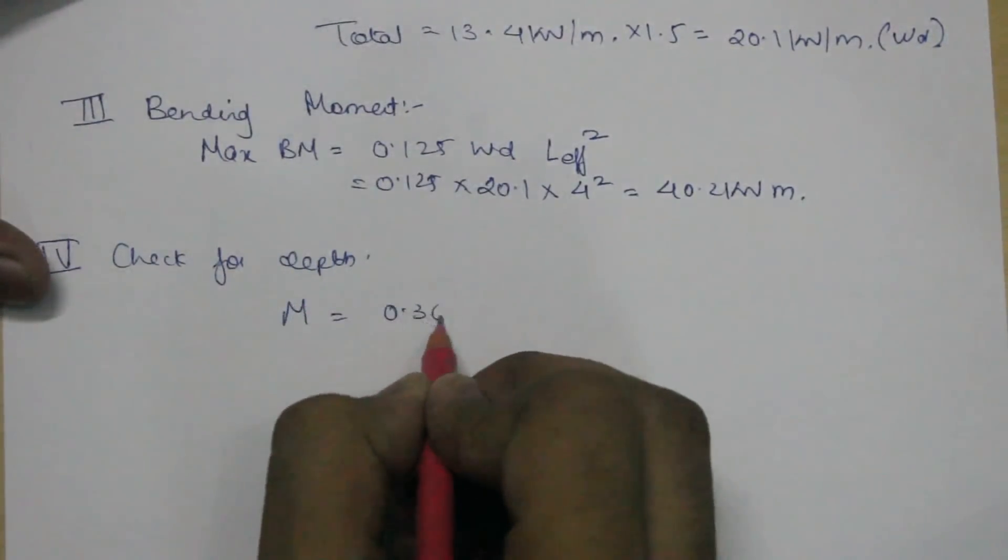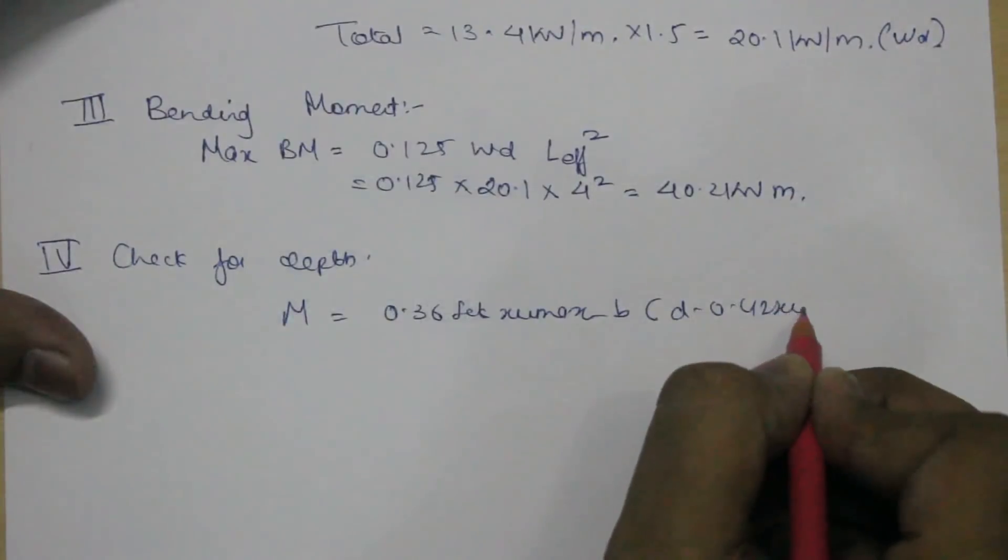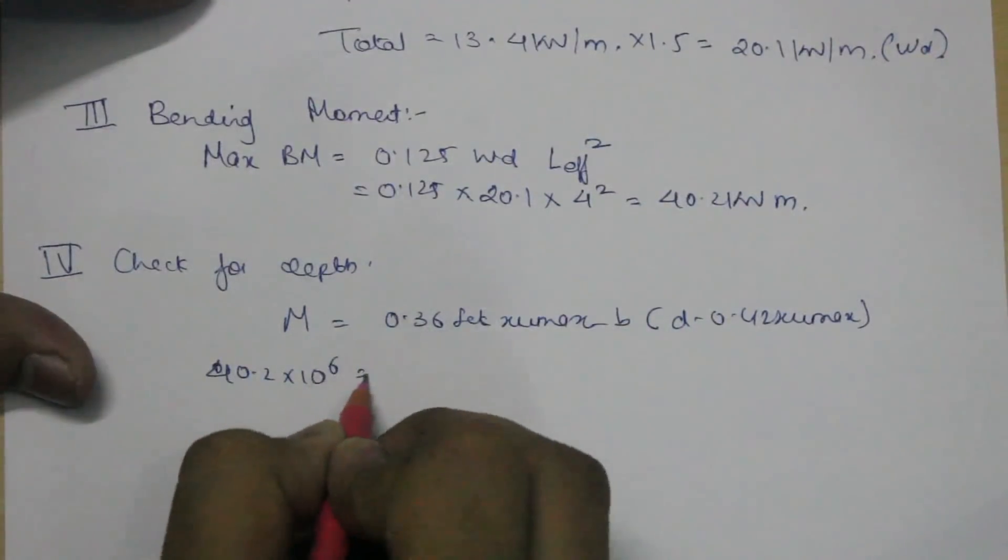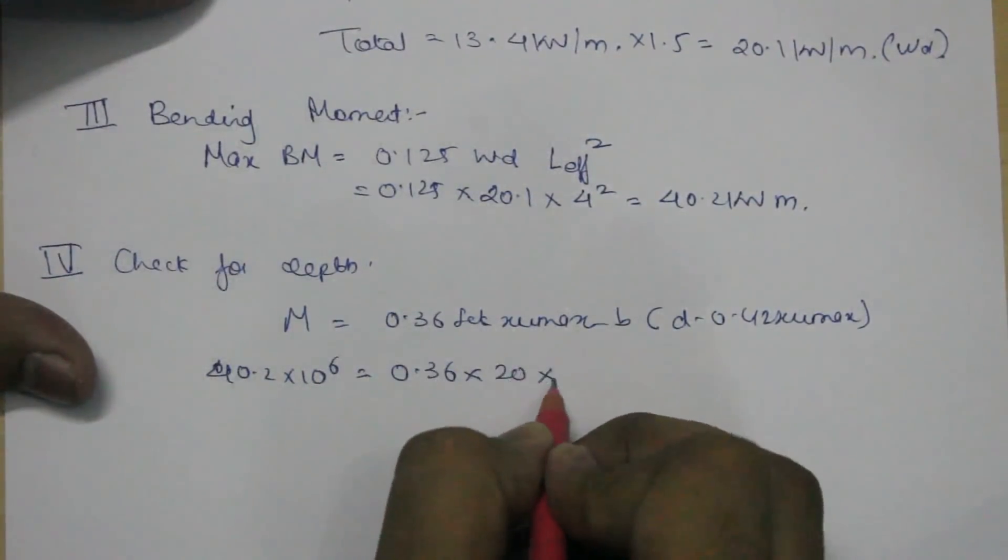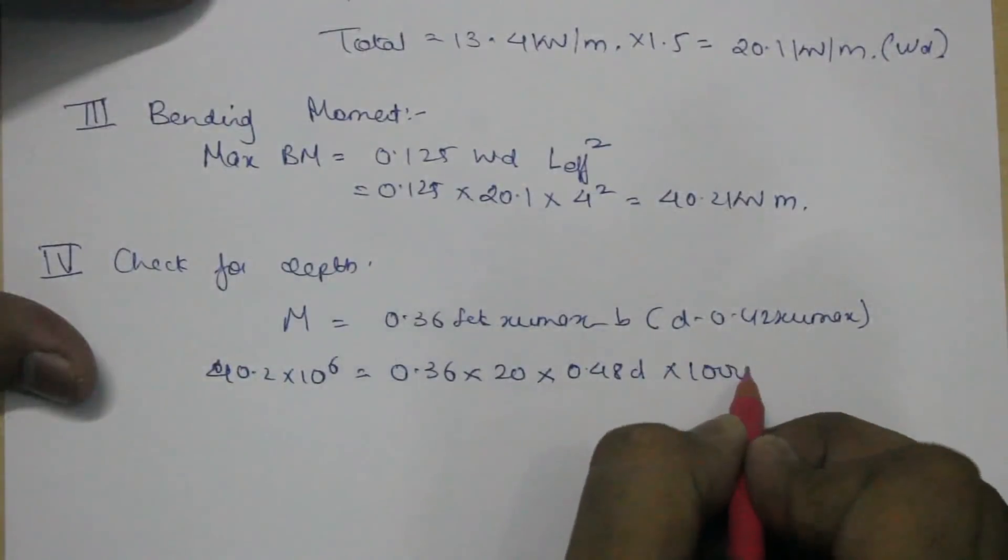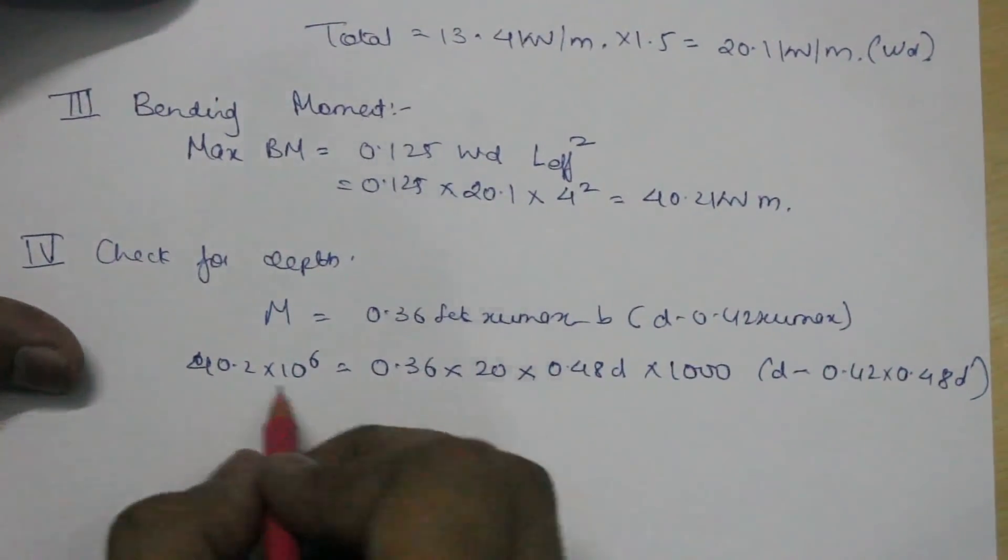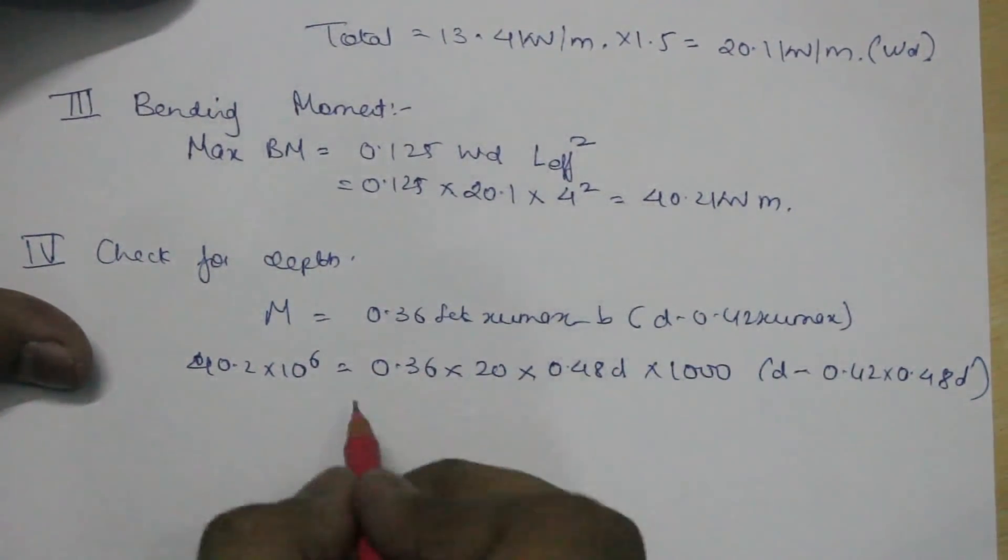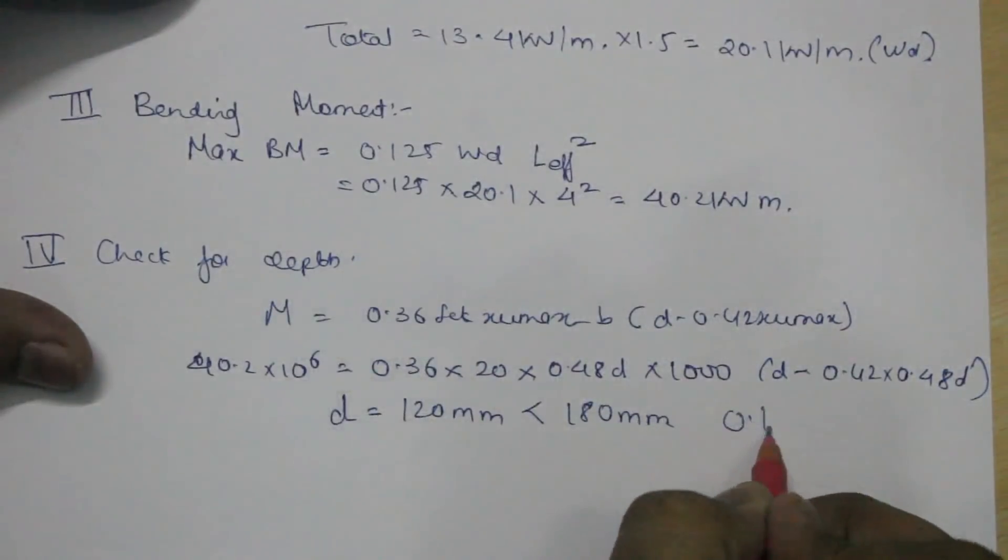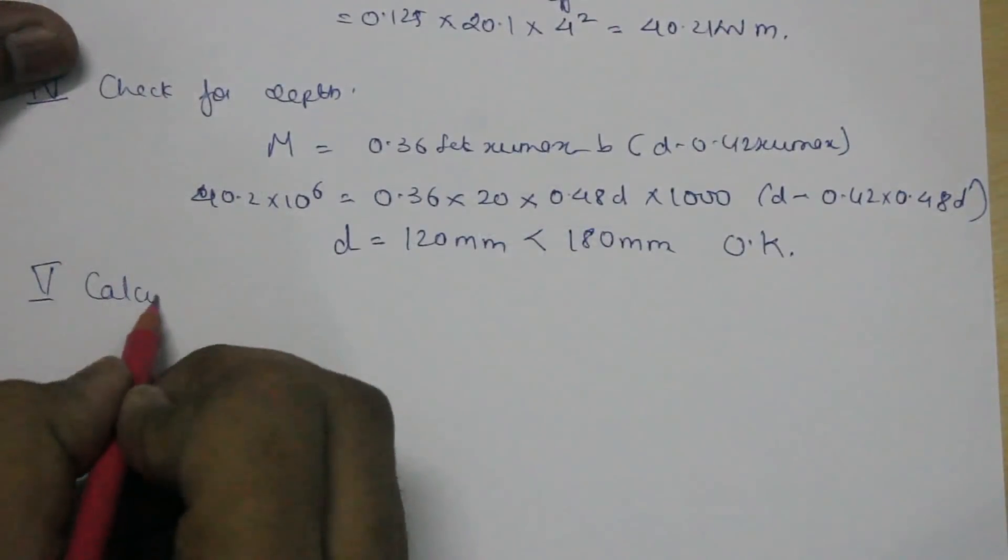So M is equal to 0.36 fck times xu max b d minus 0.42 times xu max. Now I'll plug all the values here. 40.2 into 10 raise to 6 is equal to multiplied by 20, which is the grade of the concrete, 0.48 d for Fe415 steel, 1000 d minus 0.42 multiplied by 0.48 d. If we calculate d using calculator, you get 120 mm, which is less than 180 mm which we assumed earlier, so this is okay.